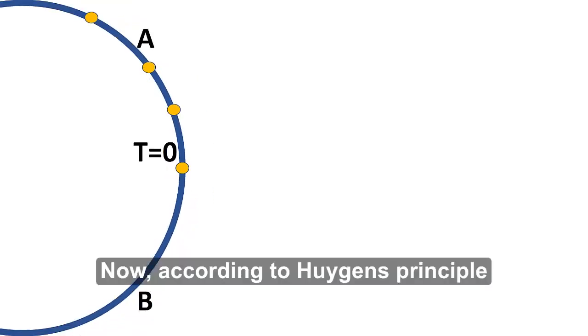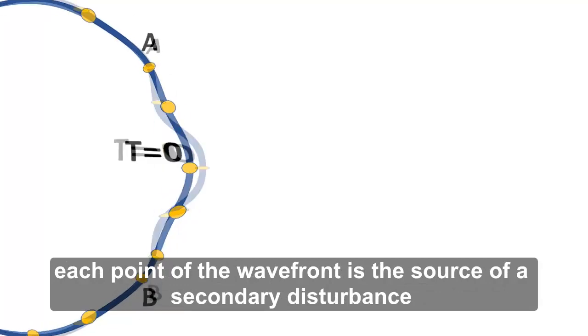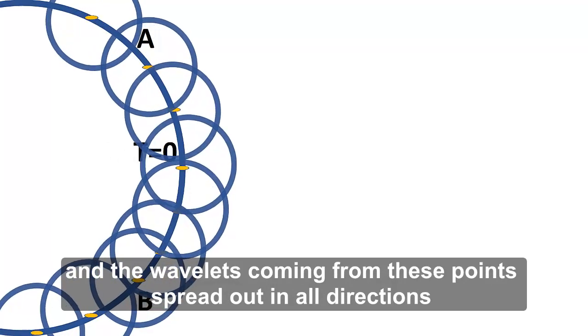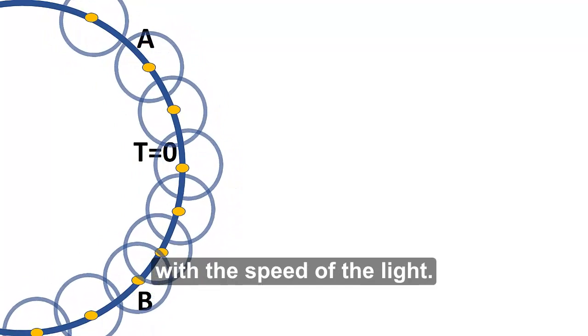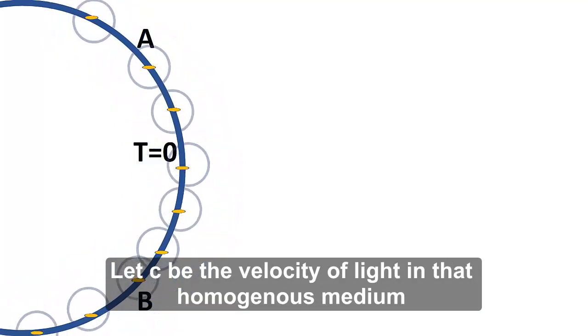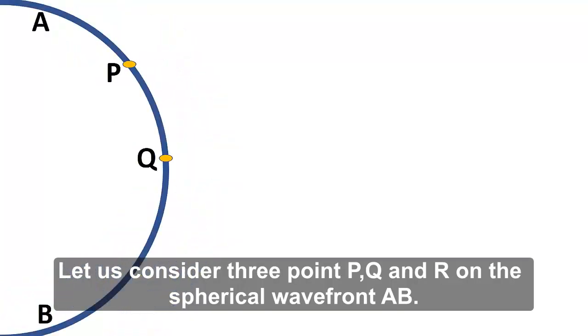Now, according to Huygens' principle, each point on the wavefront is the source of secondary disturbance and the wavelets coming from these points spread out in all directions with the speed of light. Let c be the velocity of light in that homogeneous medium. Let us consider three points p, q, and r on the spherical wavefront AB.